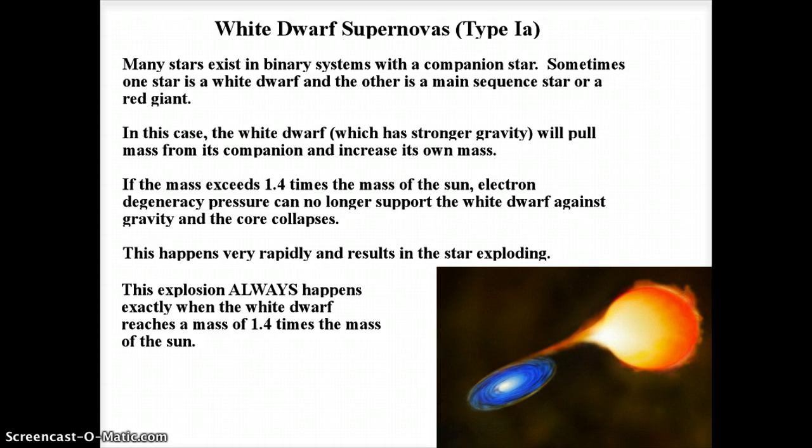This happens to certain white dwarfs that are in binary systems, like Sirius, where there's one star orbiting another. Let's imagine a situation like Sirius where one star is a white dwarf and the other one is a main sequence star or it could also be a red giant. The white dwarf, despite being smaller, has more gravity. White dwarfs have more gravity because gravity depends on how dense you are. White dwarfs are very very dense, and because it has more gravity it actually starts sucking mass away from its companion.